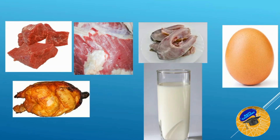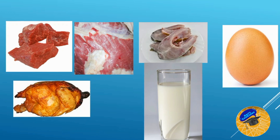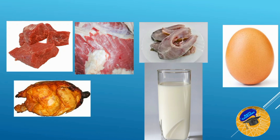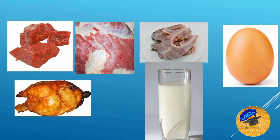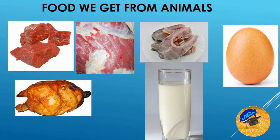Look at these images and think about where we get these things from. From animals. Milk from cow — good, very good — and eggs from hen, very good. These are foods we get from animals.